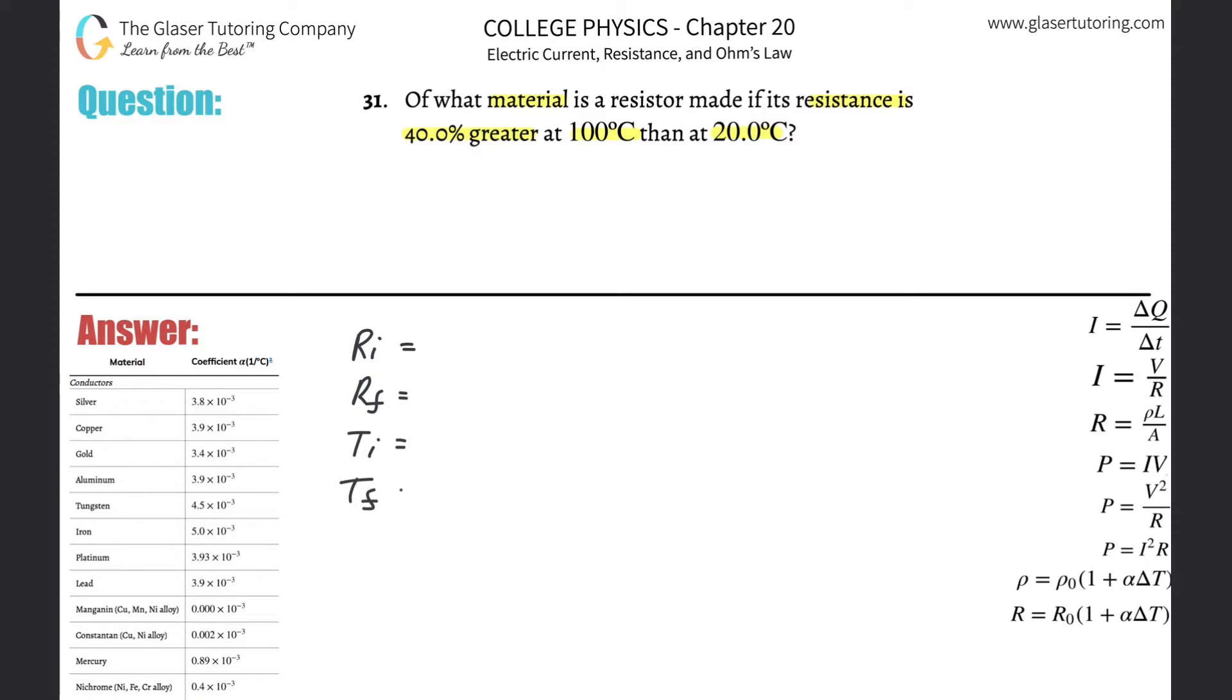I'll write down the final temperature Tf. I'm also talking about changes in resistance and temperature, and I'll need the alpha value of the particular material. Let's first work with the temperatures. The initial temperature sounds like it's going to start at 20, so let's plug in 20 degrees Celsius there.